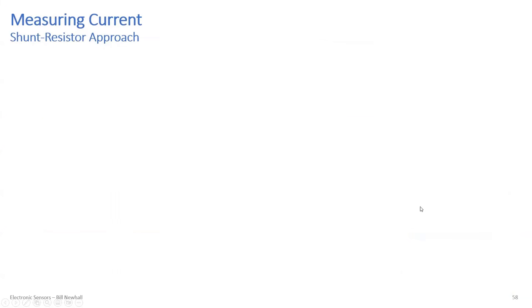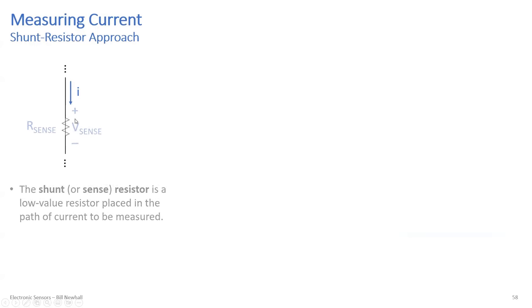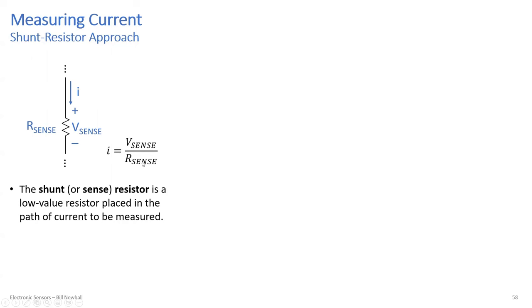One straightforward way of measuring current is using what's called a shunt resistor. If you have a wire — some conductor — and you want to measure the current I through that wire, you can insert a resistor in that wire, called the sense resistor. It's usually a very low-valued resistor placed in the path of current you want to measure, and then you measure the voltage V_sense. Since you know the value of R_sense, you can calculate I.